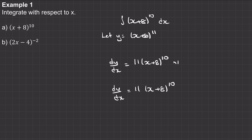You can see our derivative looks a lot like our integral, apart from this multiple of 11. So we need to cancel out this multiple of 11, which we can do by multiplying by 1/11. This 1/11 multiplied by the 11 cancels to make 1, so the integral will be (1/11)(x + 8)^11 plus the constant C.